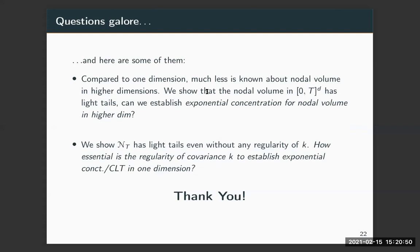There are several interesting but unanswered questions about nodal volume of stationary Gaussian processes. First, can we prove an exponential concentration for nodal volume in higher dimensions, which is not known? Second, in dimension one, the exponential concentration and CLT assumed quite strong conditions on the covariance K — can we prove these results under much milder assumptions on mu or K? Thank you very much for your attention.